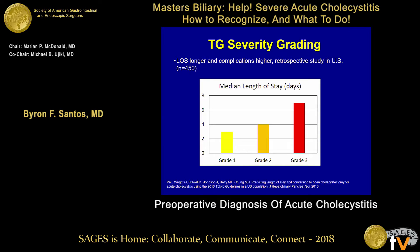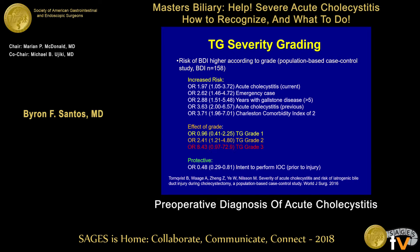Length of stay is also predicted based on severity. A population-based case-control study of bile duct injuries looked at 158 patients with major bile duct injury compared to a matched group. Factors that increased risk were acute cholecystitis, emergency cases, gallstone disease greater than five years, history of prior acute cholecystitis, and high comorbidity index. Tokyo Guidelines severity grade was also predictive and correlated with bile duct injury. Interestingly, what was protective in this study was intent to perform IOC — intent prior to the injury, as opposed to IOC performed after an injury.